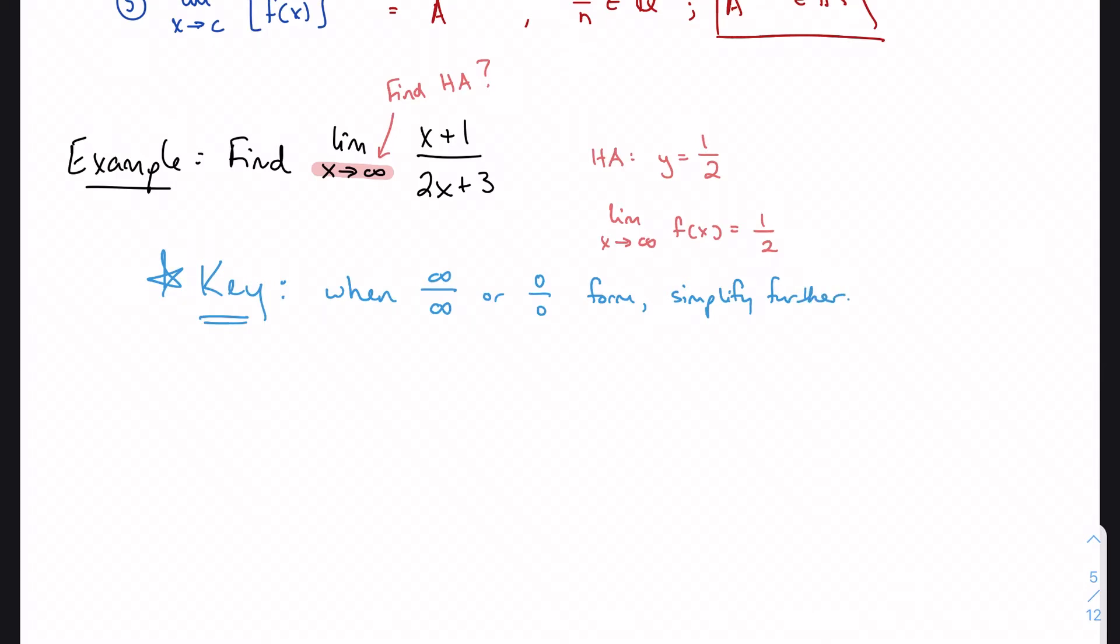One of the things we can do to simplify further is to divide both numerator and denominator by their highest degree term separately. So this is all going to happen independently.